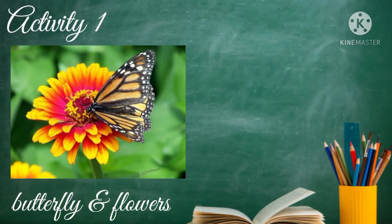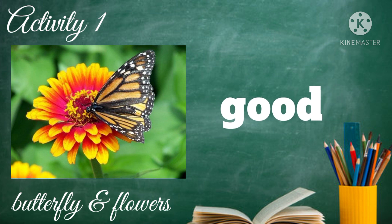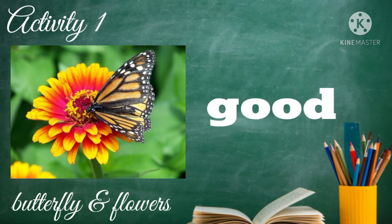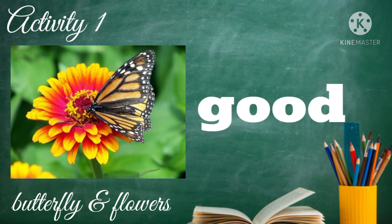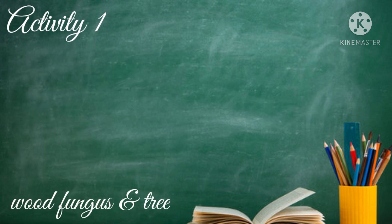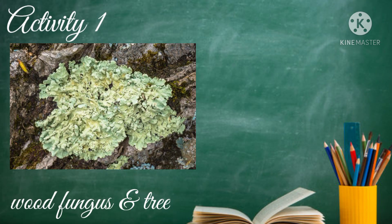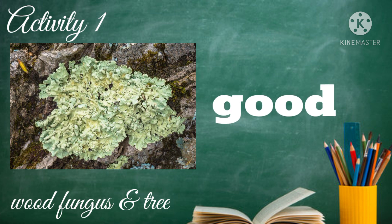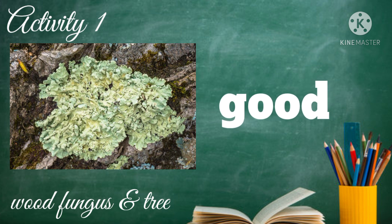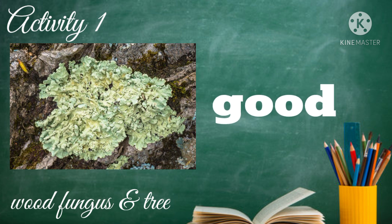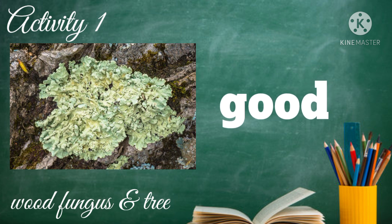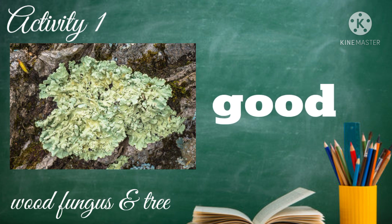Another example is butterfly and flower. This interaction is good to the environment — the flower provides food for the butterfly and the butterfly helps the flower pollinate. How about wood fungus and tree? That interaction is good to the environment. The fungus helps the plants extract nutrients and water. In return, the fungus receives food from the photosynthesizing plants.